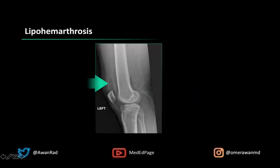Here's a nice X-ray example of what a lipohemarthrosis looks like. Notice here in the suprapatellar recess there's a straight line — which is never normal. The only normal straight line allowed in the body is on a frontal erect radiograph of the chest from the stomach fluid level. Otherwise, no straight lines are physiologic. This more lucent area is fat and this denser area is blood — that's the lipohemarthrosis. You can also see the intraarticular fracture anteriorly along the tibial plateau.